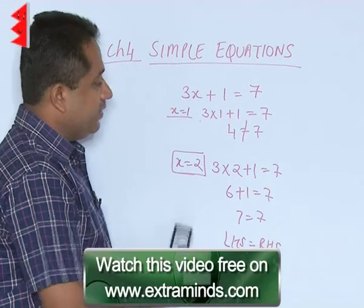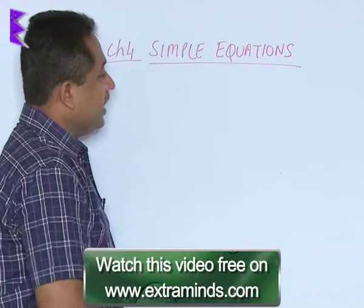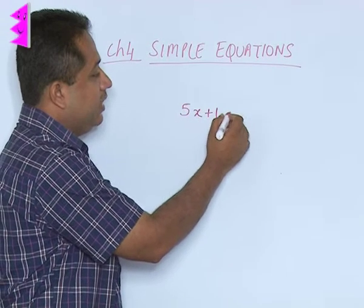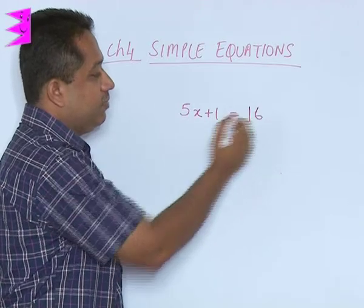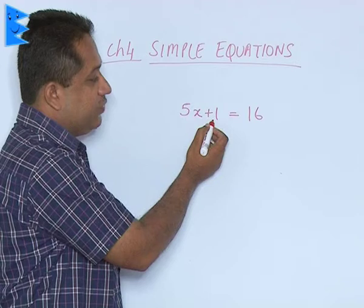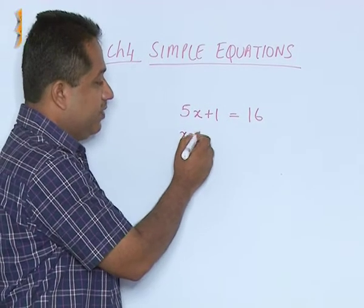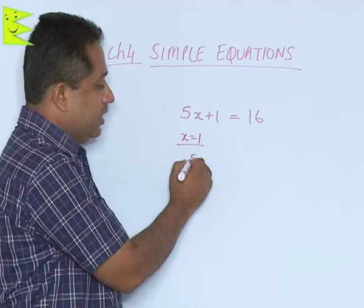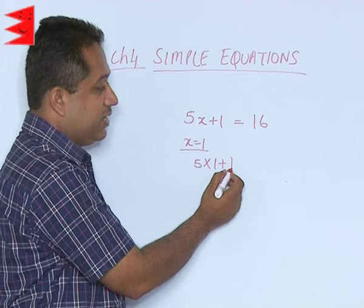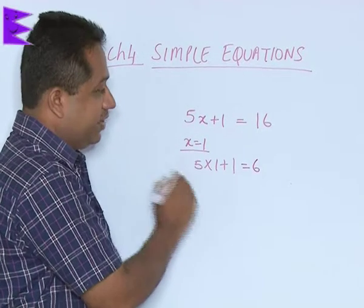Now this method by which we can find out the value of the variable is called the trial and error method. Let us try out one more example with the trial and error method. Let us have 5x plus 1 is equal to 16. Now here we have LHS 5x plus 1 and it has to come equal to 16. Starting with x is 1, we get 5 into 1 plus 1. This is going to give you 5 plus 1 that is 6. It is not equal to 16. So this is not a solution.